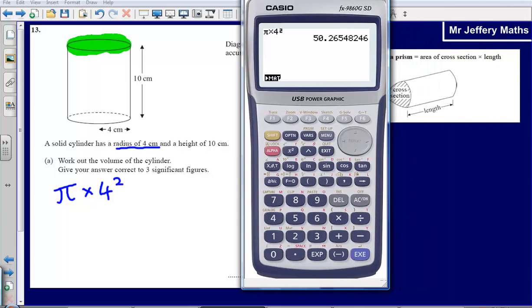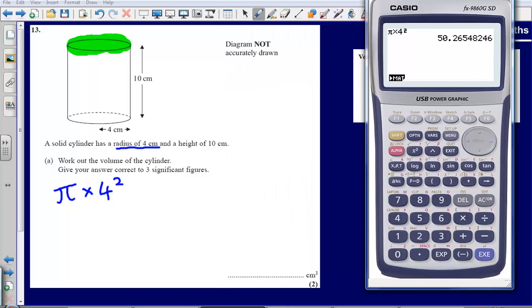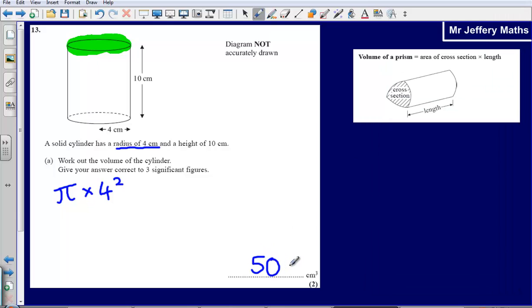Then I need to multiply that area by the length. The length here is 10, so I simply multiply this number by 10. Giving this value to three significant figures - 1, 2, 3 - let's look at the next number after that, it's .6. So that means I'm going to round this number up to 503 cm³ as our final answer. We've just done π times 4 squared times by the length, 10.